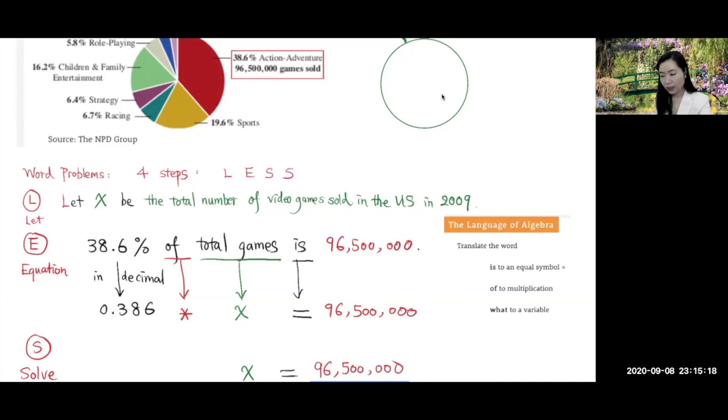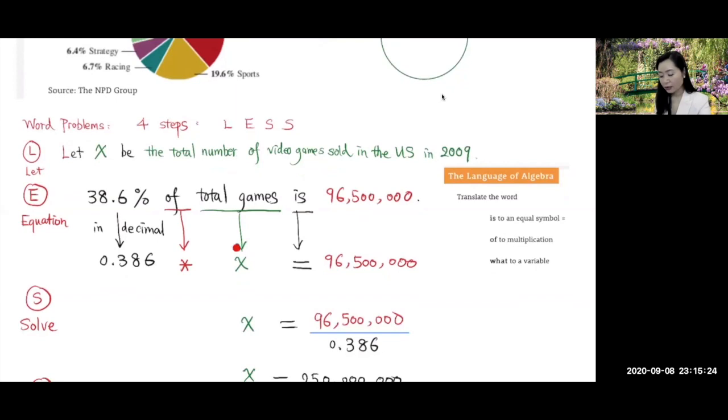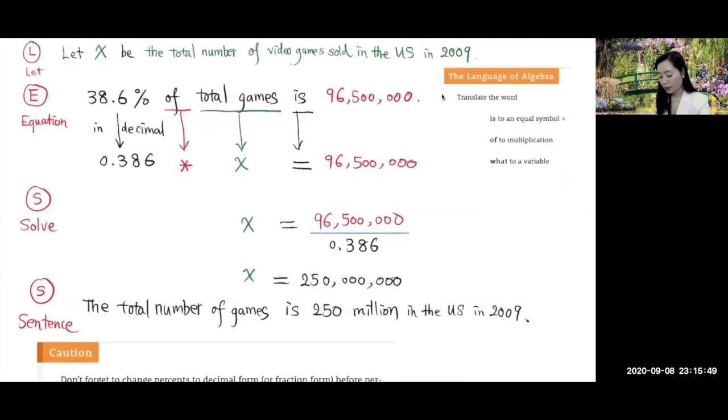The next step is to solve it. To solve this, we need to isolate X. To isolate X, we undo this multiplication. To undo multiplication, we divide. So we divide both sides by 0.386. X is going to equal this divided by 0.386. Calculating this, we got 250 million number of games.